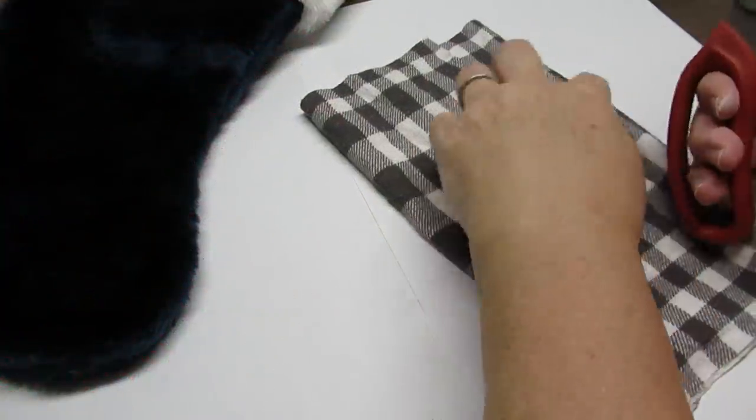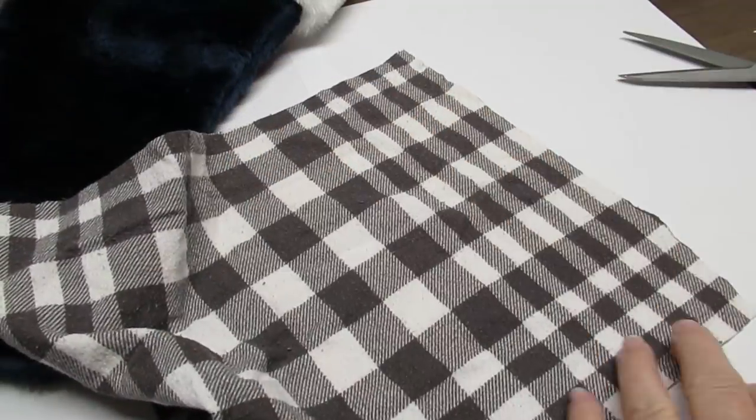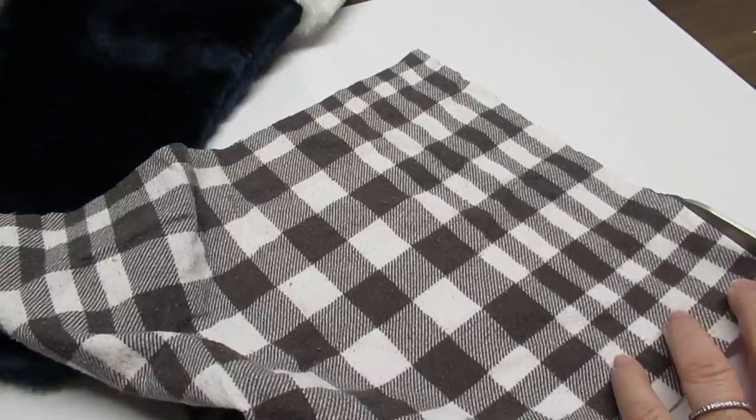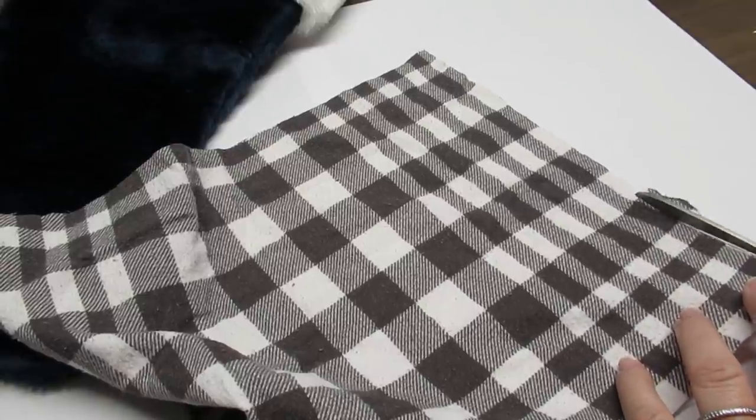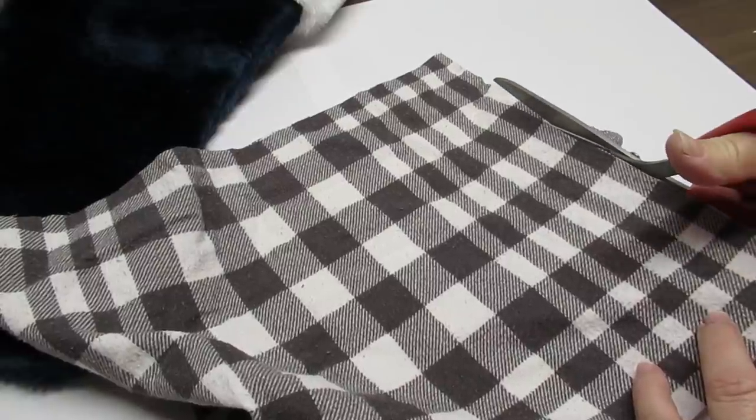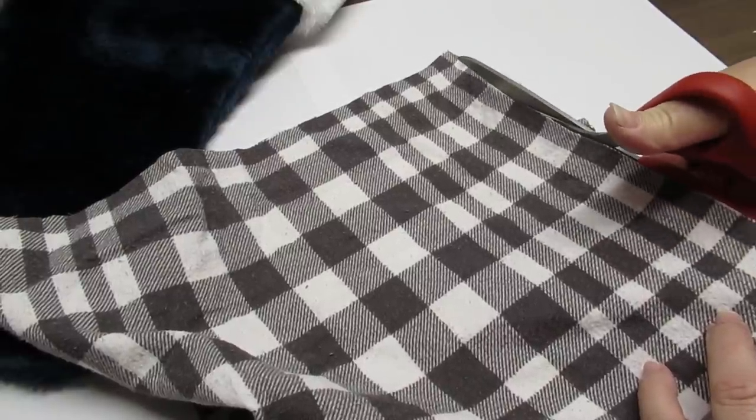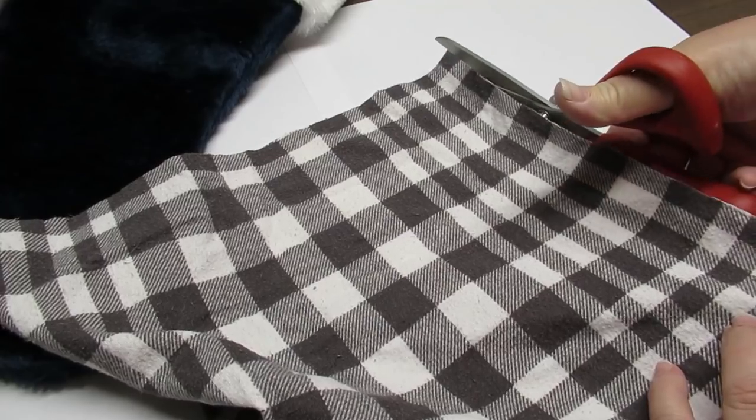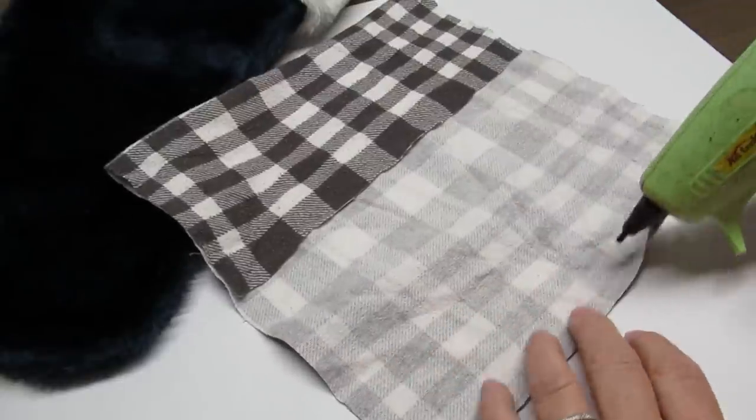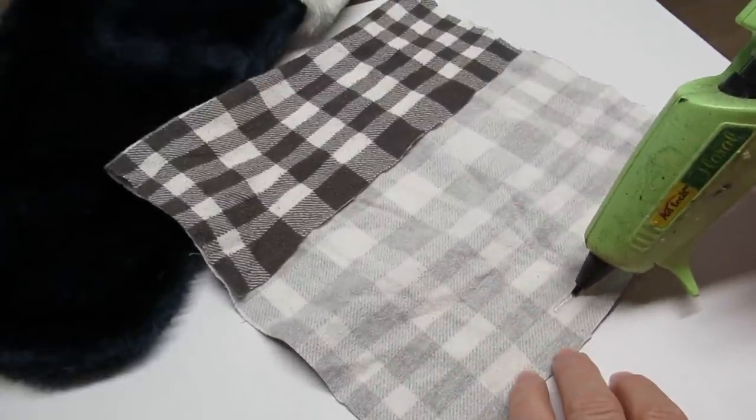For my second DIY gift I'm going to make a gnome. There's lots of people out there who are gnome collectors and they're really not that difficult to make. I'm using this buffalo check or buffalo plaid fabric, it's flannel and it was a sheet that I picked up at a thrift store. I'm always on the lookout for different patterns and the grays and whites and blacks are something that I really like.